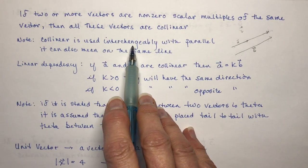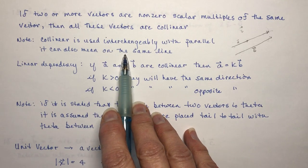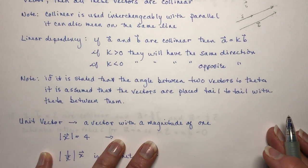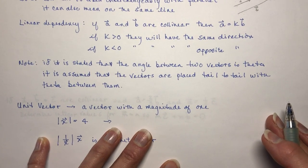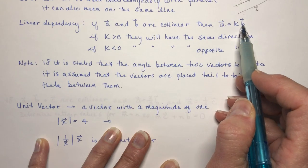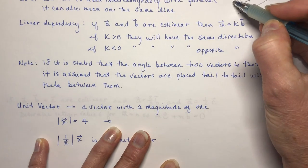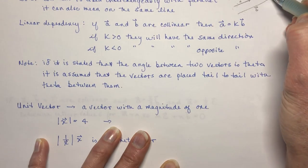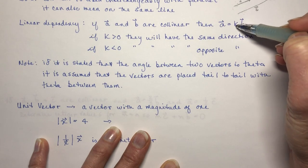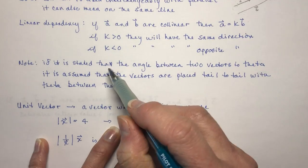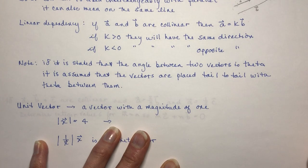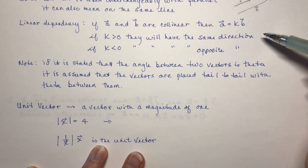Collinear is used interchangeably with parallel — it can also mean on the same line. Something to put in your memory banks: linear dependency. If vector A and vector B are collinear, then A equals K times B. So if B was 2 vector A's, I could say A equals one-half of vector B. If K is greater than zero, they have the same direction; if K is less than zero, they have opposite directions.